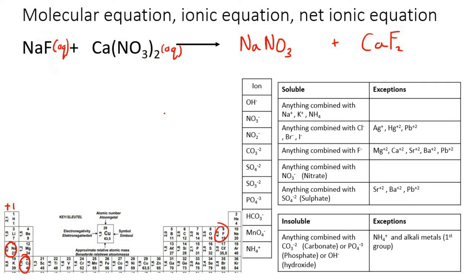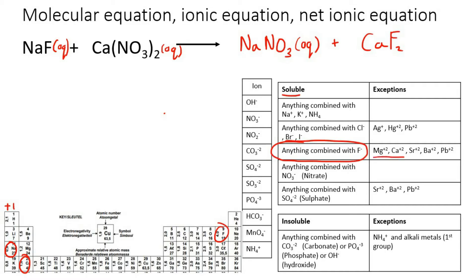That's the first step. Now we also need to check which of these is going to be a precipitate. We know that all nitrates are soluble, so NaNO3 is aqueous. Now let's look at CaF2 — anything combined with fluorine is soluble unless it's one of these exceptions. We've got calcium, so that means this is a precipitate, meaning it's a solid.